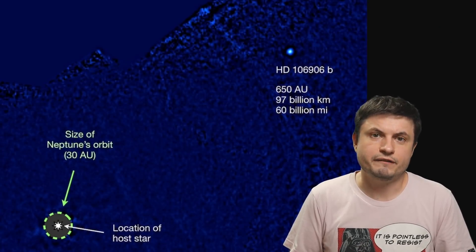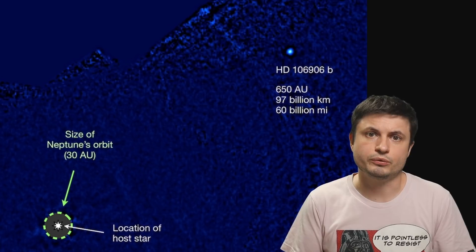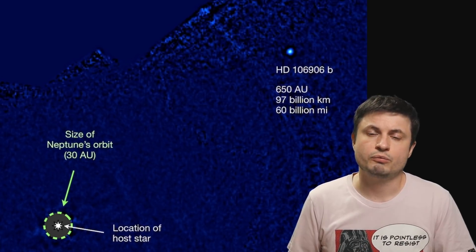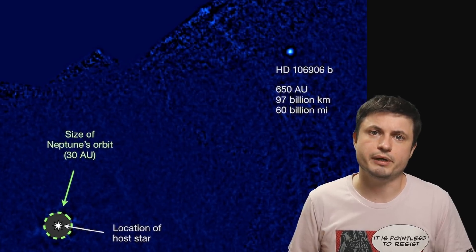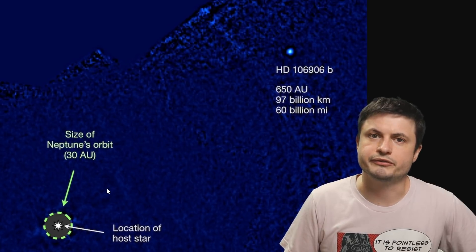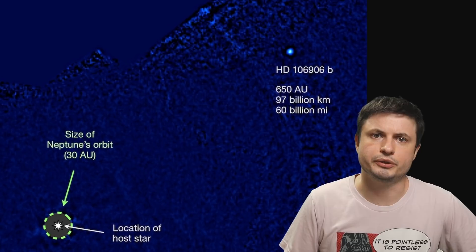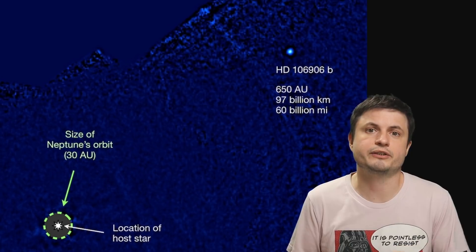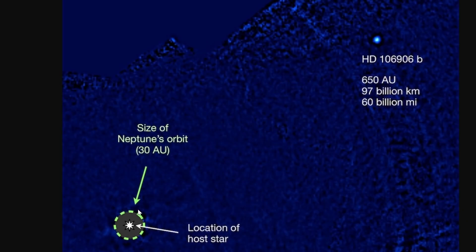And the planet itself was discovered around seven years ago, but back then we had no idea what its orbit around the star system was, we only knew the distance away from the binary, the distance being around 650 astronomical units. Although the more recent estimates suggest that it's maybe even farther around 730 astronomical units. And just for comparison, this is of course the orbit of Neptune at around 30 astronomical units.